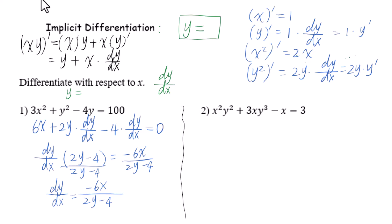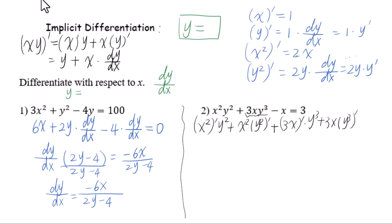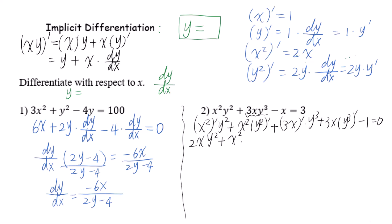Let's go to question 2. We take the implicit derivative of both sides of the equation. For x² times y², remember to use the product rule: x² prime times y² plus x² times y² prime.